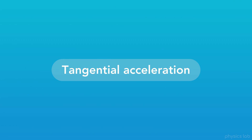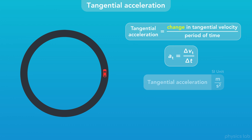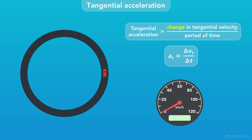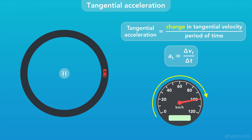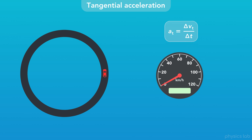The last thing to cover is tangential acceleration. Like linear acceleration, tangential acceleration is the change in tangential velocity divided by a period of time, represented as a sub t — a for acceleration, and t for tangential. The SI unit is meters per second squared, the same as for linear acceleration. It's important to remember that acceleration means a change in velocity, not necessarily an increase. If a car has a velocity of 100 kmph and it slows down, that's also acceleration — in that case the acceleration would be negative.